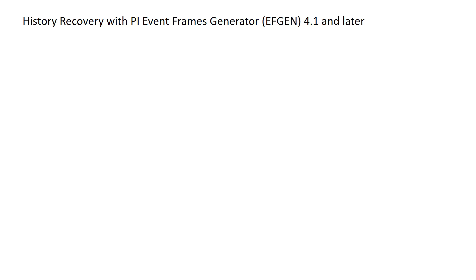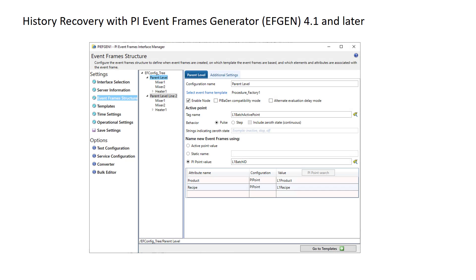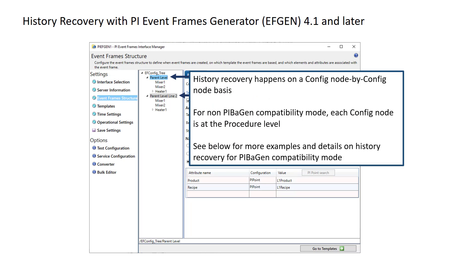Let's take a look at history recovery with PI Event Frames Generator, or efgen, version 4.1 and later. History recovery has changed substantially with version 4.1 and later. Here we have PI Event Frames Interface Manager. History recovery for 4.1 and later is going to happen on a config node by config node basis.